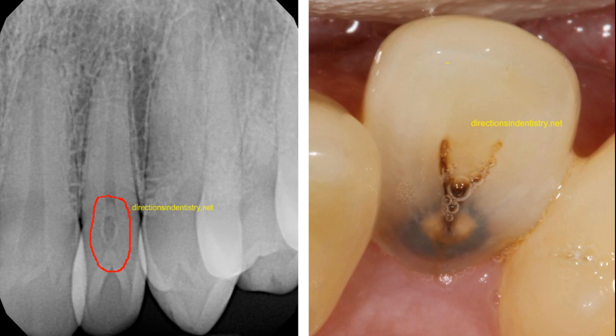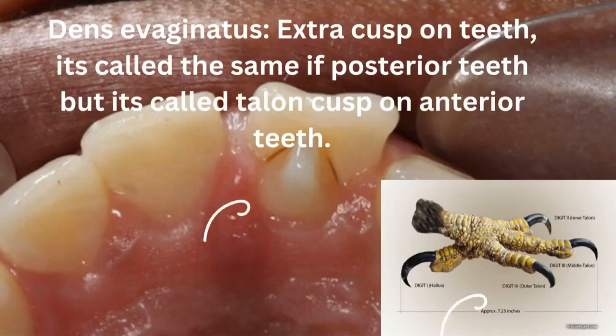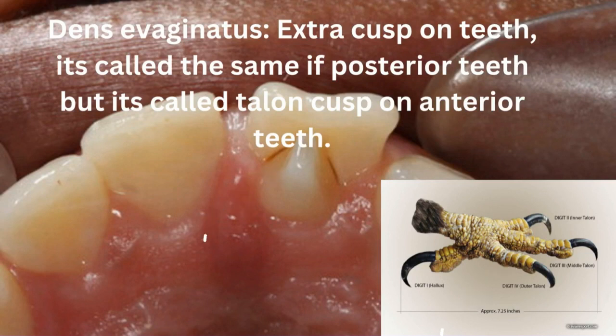Here is the X-ray appearance for dens invaginatus. As you can see, there is a radiolucency within the pulp and there is radio-opacity. This radio-opacity is the dens invaginatus, which confirms our diagnosis. The presence of radio-opacity — which is the enamel within the pulp — confirms the condition. The most commonly affected teeth are the maxillary lateral incisors.